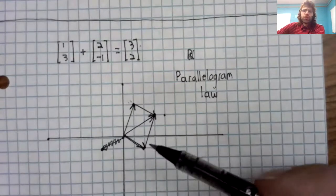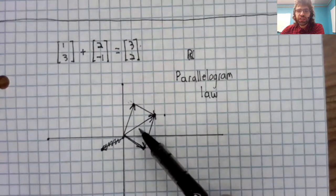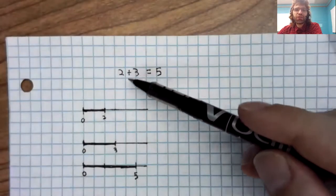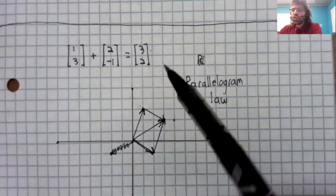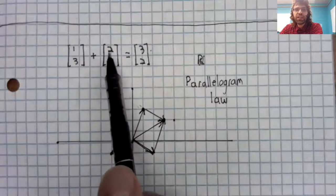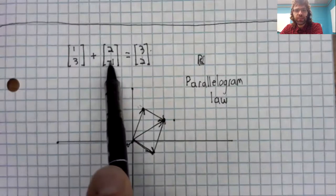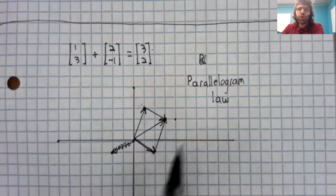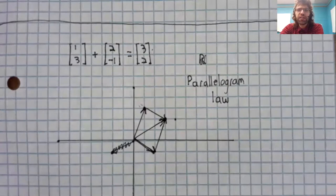Now, you wouldn't use the parallelogram law to do this addition any more than you add two and three by looking at line segments. You'd do the addition the way we did up here: add the first elements, add the second elements. But this does provide some useful intuition about what the addition is actually doing geometrically.